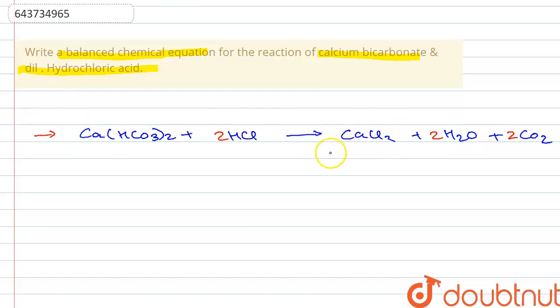main product that you are obtaining here is calcium chloride. Water is a by-product, and along with it carbon dioxide as a gas is being released. So that is the answer for the question. Thank you.